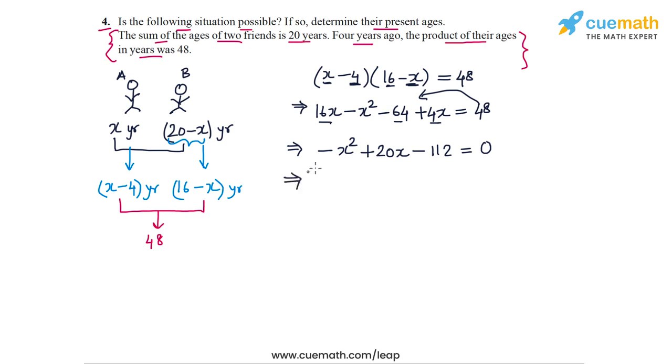So minus x squared plus 20x minus 112 equal to 0. Or if I write it in the normal way, where the coefficient of x squared is positive, I can write this as x squared minus 20x plus 112 is equal to 0. And now I need to figure out whether this equation has real roots or not.